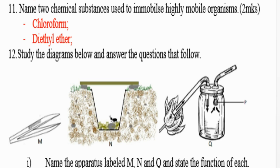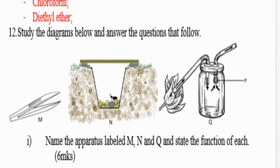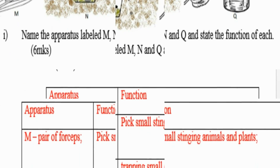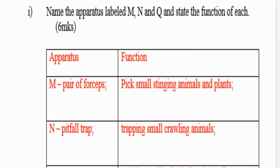Write down the function of the parts labeled M, N, and Q in the comment section. Other learners will find your answer and benefit from your participation — that is how we make our presentation lively. The apparatus labeled M is a pair of forceps; their work is to pick small stinging animals.